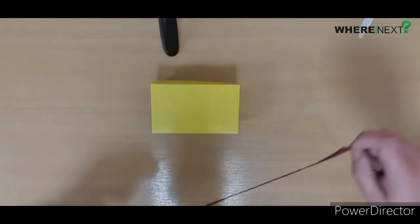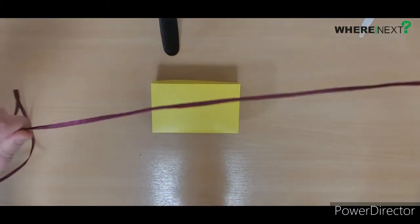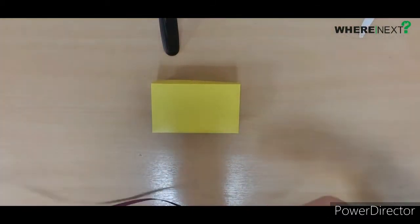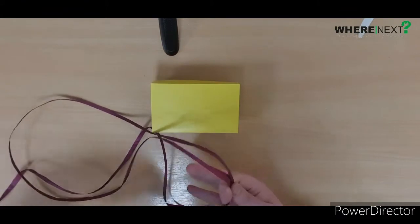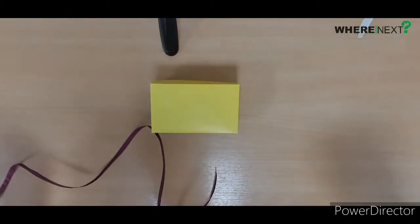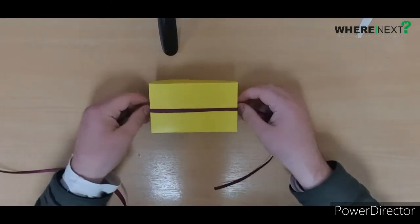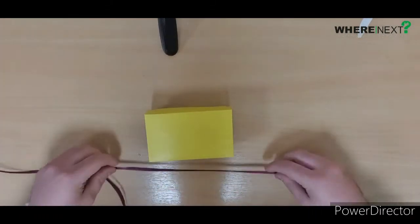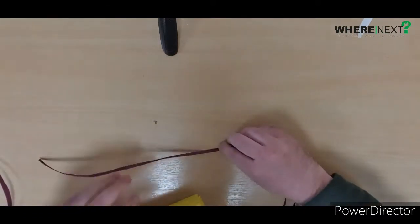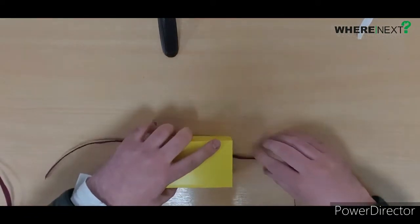Then grab your ribbon and cut it into four equal strips. What we're doing is going around one side, pop it down flat, stick it on.